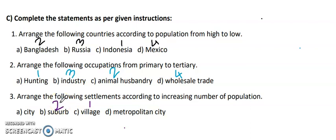Then we have third number is city. And last is fourth, the metropolitan city. So this is how you are going to arrange the statements according to the instructions given. This is all about the exercise of question one section C and the answers for it.